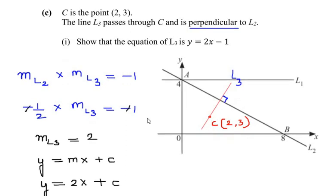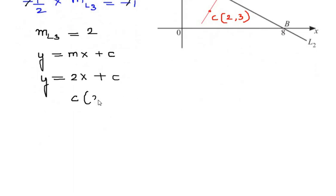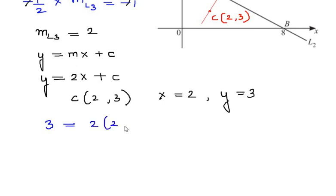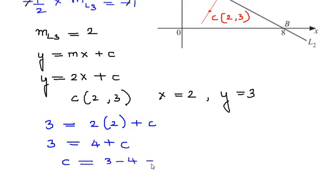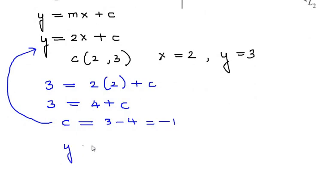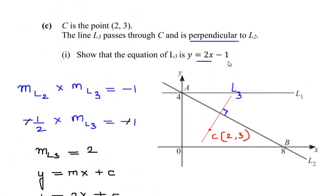To find c, we use the point C with coordinates (2,3) through which L3 passes. Substituting x=2 and y=3: 3 = 2(2) + c, so 3 = 4 + c, giving c = 3 - 4 = -1. Substituting back, the equation of line L3 is y = 2x - 1, which is what we had to prove using the condition for perpendicular lines.